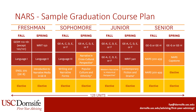One thing to note about this major is that students can take several courses outside of Dornsife and count them towards their Narrative Studies major. You should keep in mind that all Dornsife majors, including Narrative Studies, must earn at least 104 units within Dornsife, so this will need to be factored into your course plan. For more information, please reach out to your academic advisor.